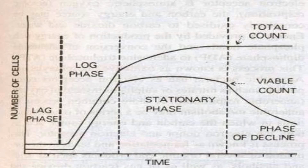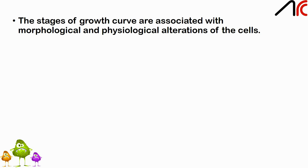This bacterial growth curve graph shows both total count and viable count. In the total count, there is no phase of decline, as can be seen in the graph. The various stages of the growth curve are associated with morphological and physiological alterations of the cell.